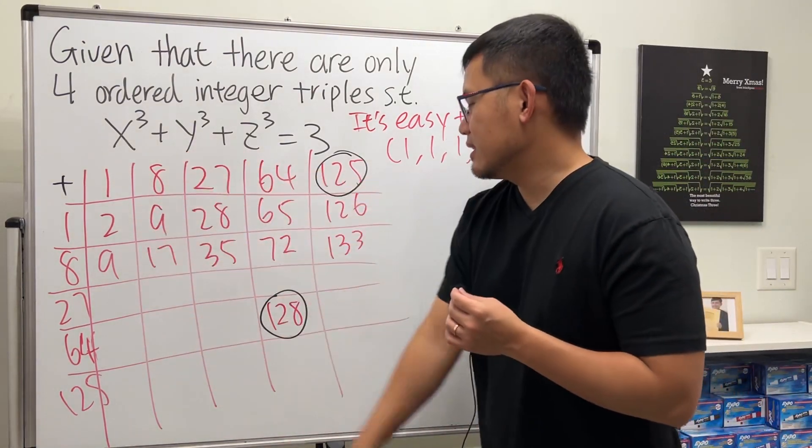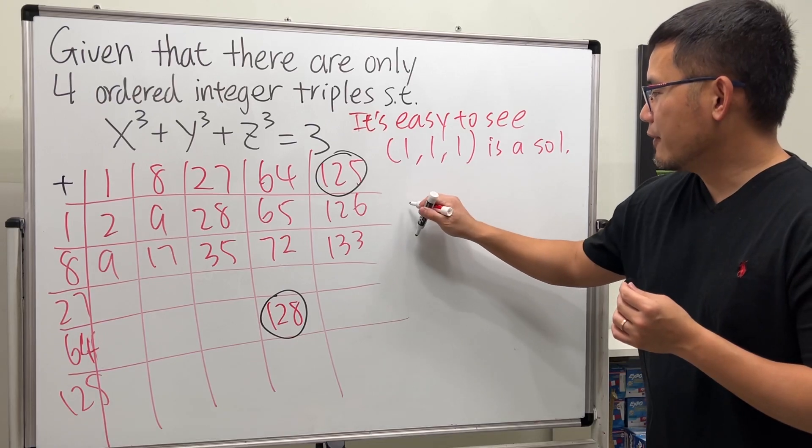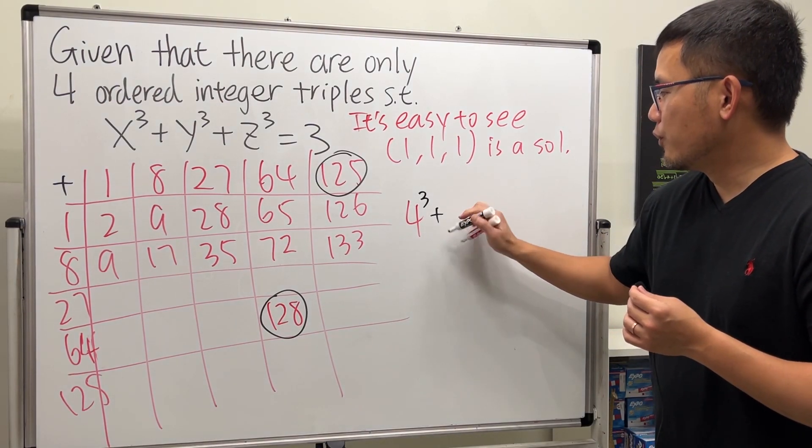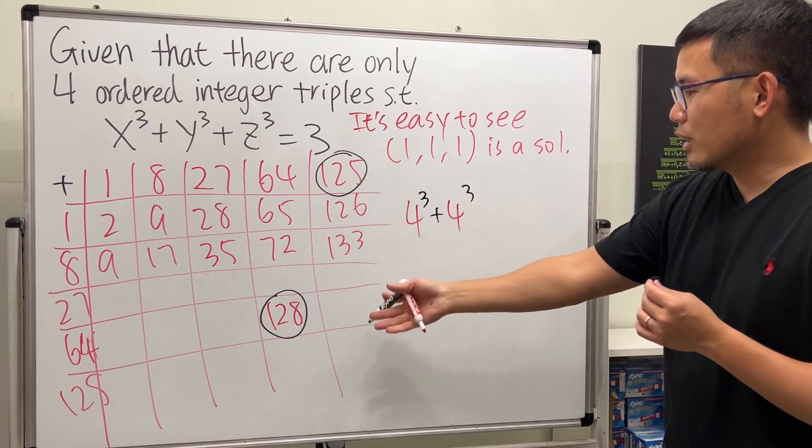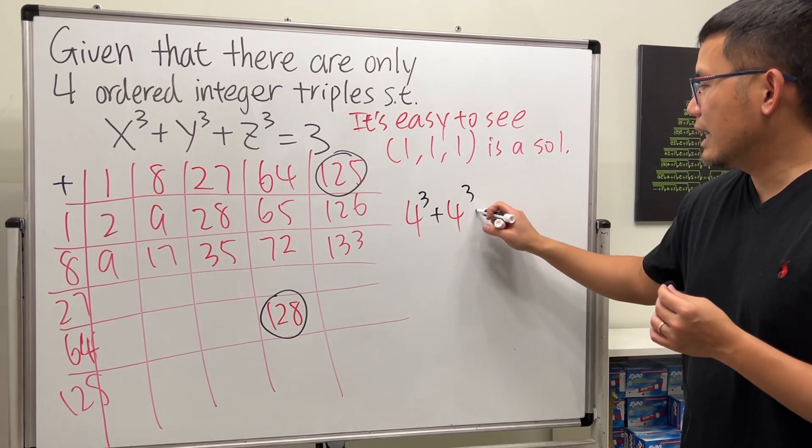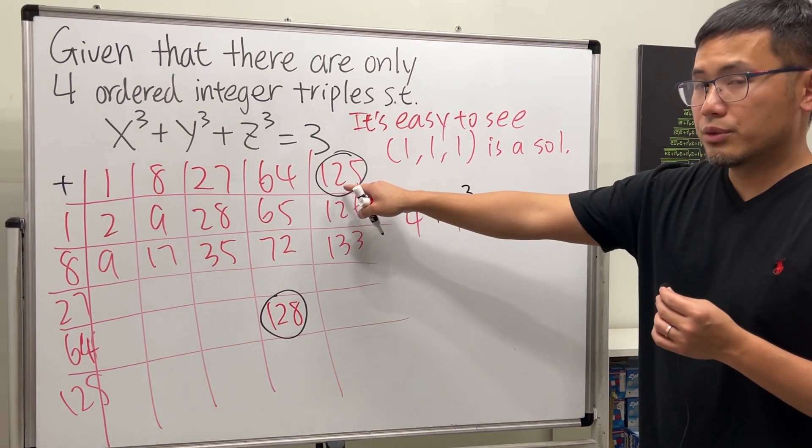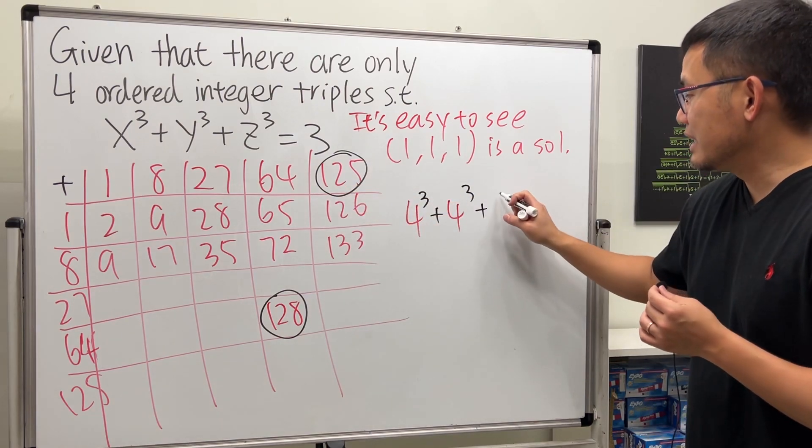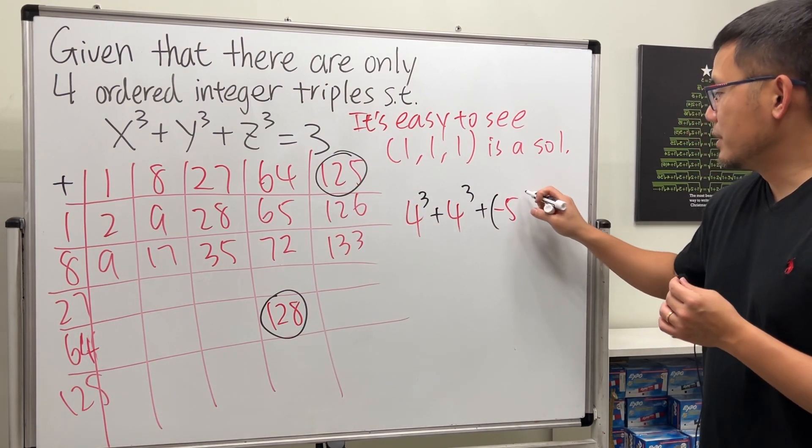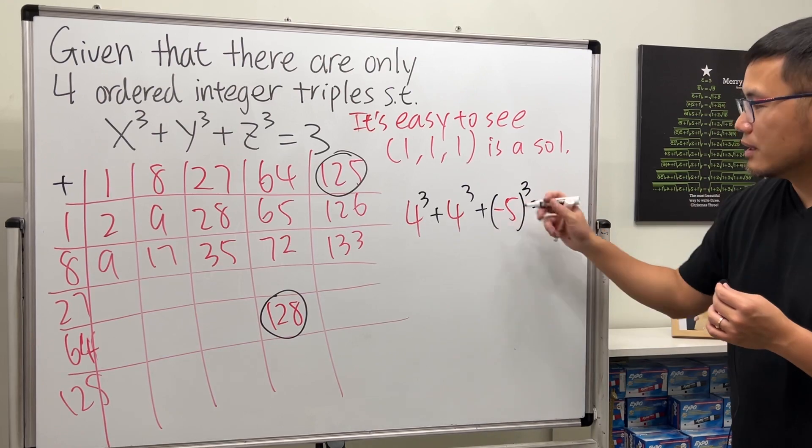So in fact, have a look. If we have 4³ + 4³, that's 128. And then we just have to add—we have to make sure this is negative, so it's -5³. That will give us 3.